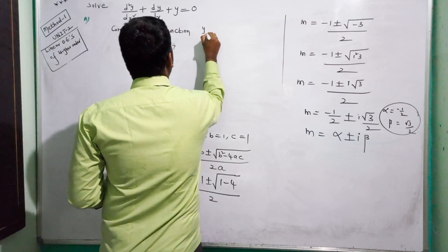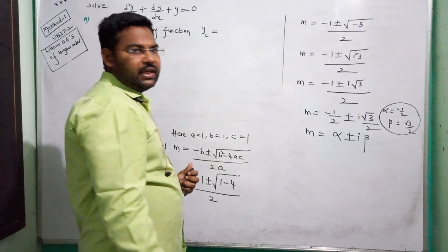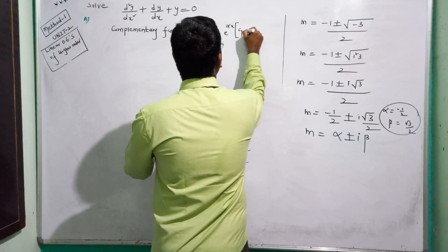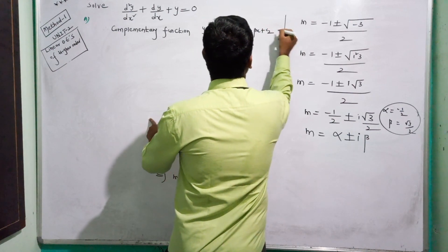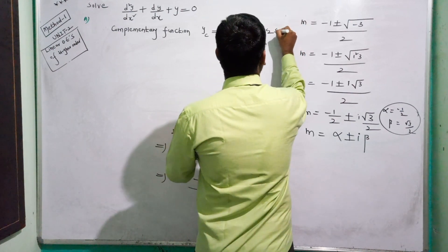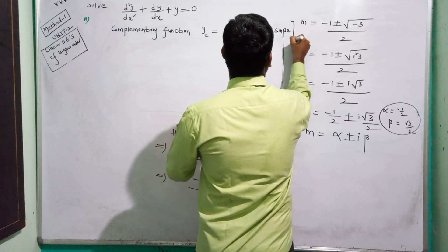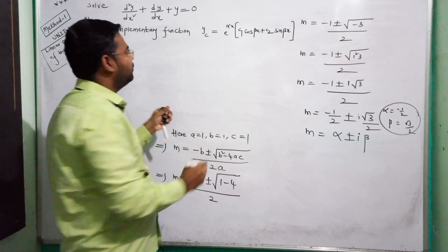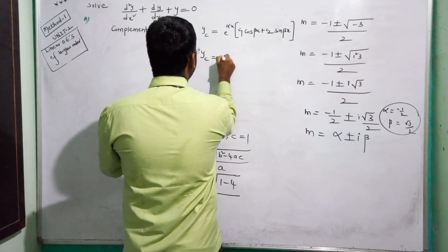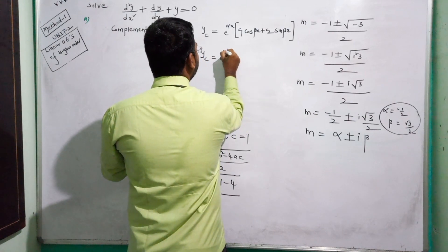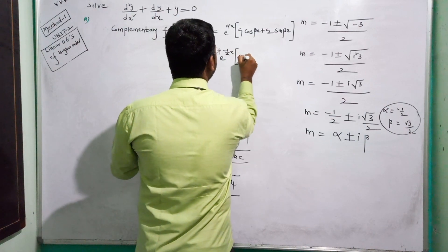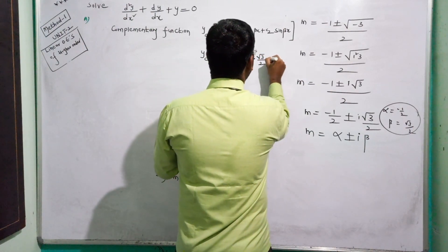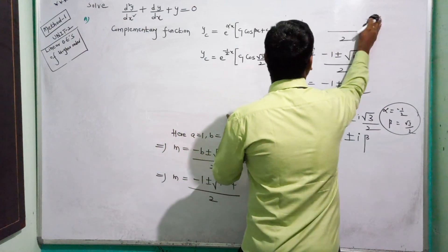Therefore, complementary function YC equals: the formula is e to the power alpha x, times C1 cos beta x plus C2 sin beta x.